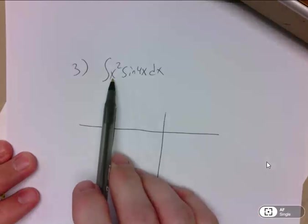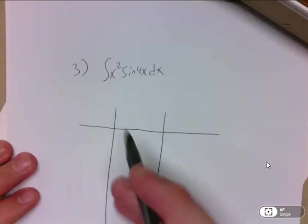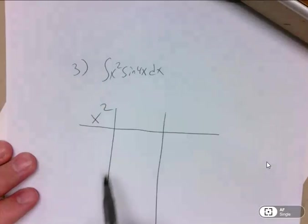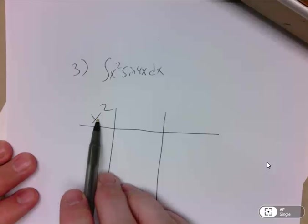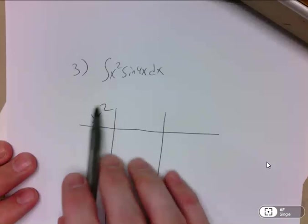And the u that you would use, that's going to be the one you're going to be taking derivatives for. And you need to have that term be one that eventually goes to 0. So I'm going to put that right here. If I were to take derivatives of this, I would get 2x, 2, and then 0. So that's how I know that it's a candidate for this column.